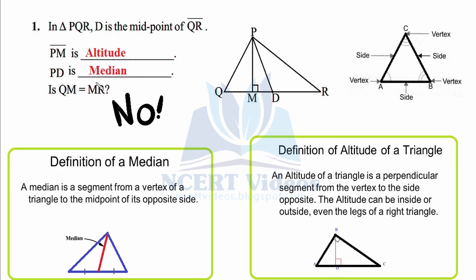Before solving these blanks, let us first revisit the concepts. A triangle has three sides, and the points where two lines meet are called vertices. A triangle has three vertices — A, B, and C — and three angles: angle A, angle B, and angle C.